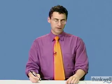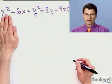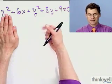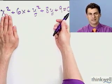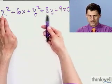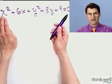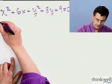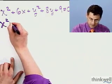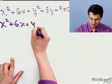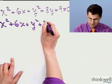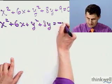If you want to review completing the square, you might want to click somewhere around me for the full tour. But let me give you a quick recap. The first thing I want to do is keep all the variables on the left and move any constants to the right. So in this case I'd write: x squared plus 6x plus y squared plus 8y equals minus 9.